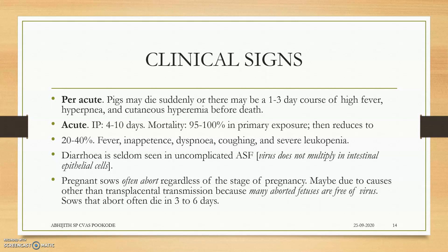In the acute form, the incubation period is 4 to 10 days and mortality is approximately 95%, so the chance of death is very high. Pregnant sows will abort their fetuses due to transplacental transmission. Diarrhea is not seen because the virus does not multiply in the intestinal epithelial cells.